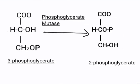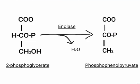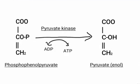Now 3-phosphoglycerate in the presence of the enzyme phosphoglycerate mutase gets converted into 2-phosphoglycerate. Here the position of the phosphate moves from the third carbon to the second carbon. Now 2-phosphoglycerate liberates one water molecule and in the presence of the enzyme enolase gets converted into phosphoenolpyruvate. Phosphoenolpyruvate in the presence of the enzyme pyruvate kinase gets converted into pyruvate, and the phosphate molecule liberated combines with ADP to generate ATP.